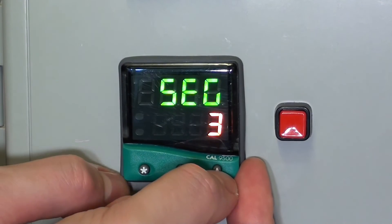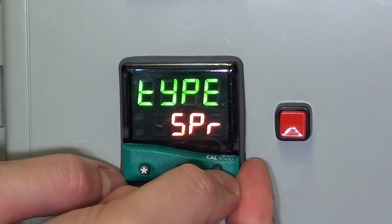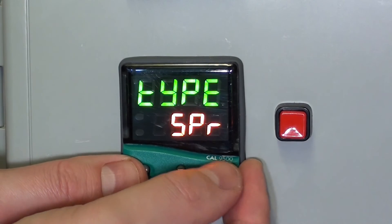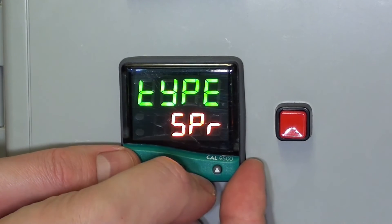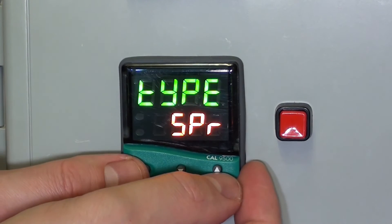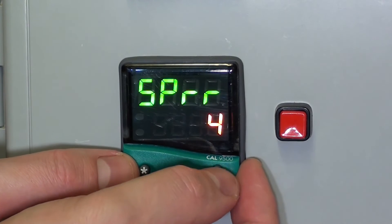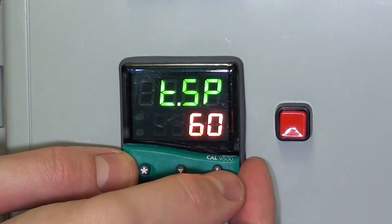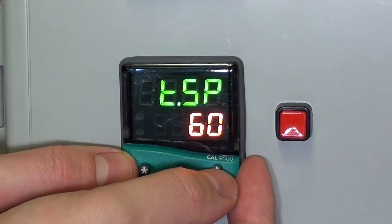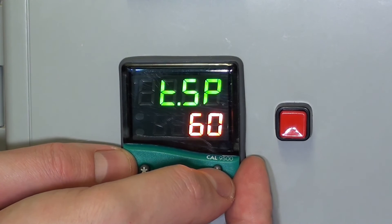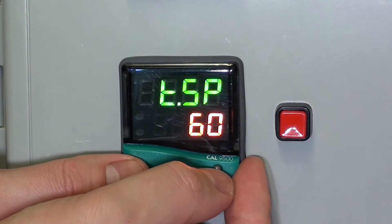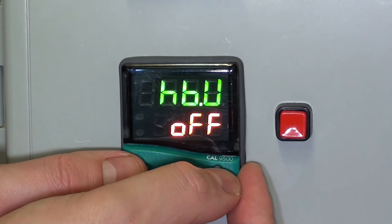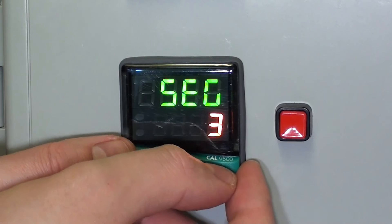Segment 3. Type we want it to ramp up again to 60 degrees, so set point ramp for segment 3. And the ramp rate this time is 4. And the target set point for it to ramp up to is 60 degrees C. That's segment 3.